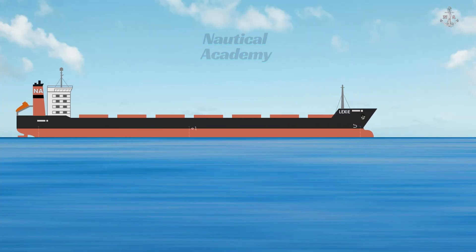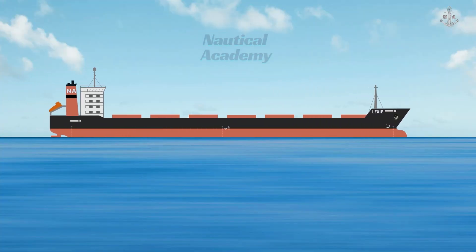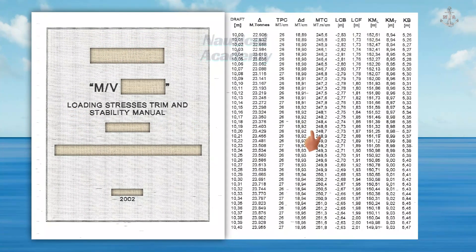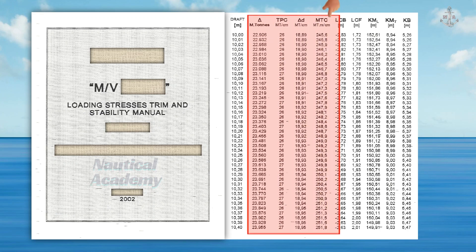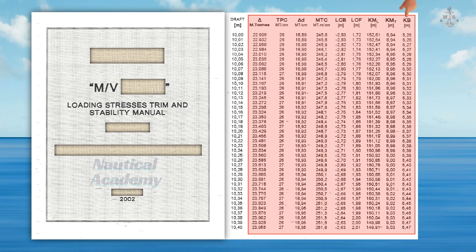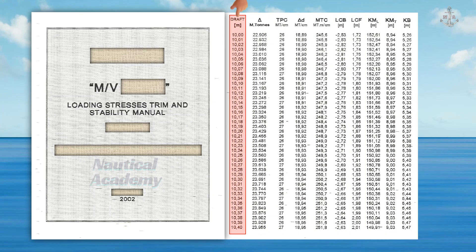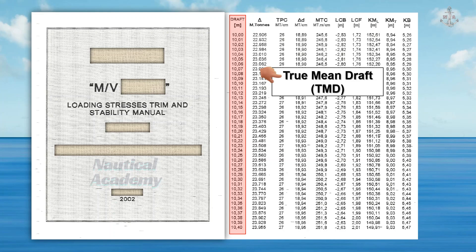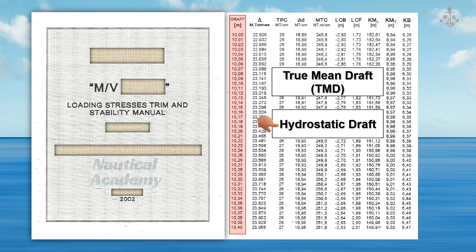Determining a ship's draft is essential, as it provides critical information found in the stability manual. By referring to the hydrostatic table within the stability manual, the ship's displacement and other key values necessary for trim and stability calculations can be determined using the ship's draft. However, this draft is not the forward, midship, or aft draft. The draft required for these calculations is the true mean draft, or the hydrostatic draft — it is not simply a matter of adding the forward and aft drafts and dividing the sum by two.